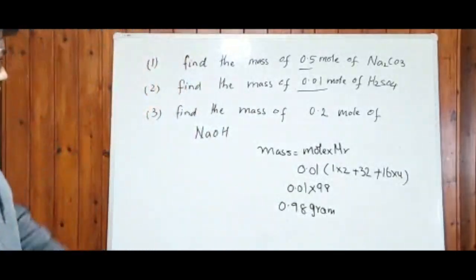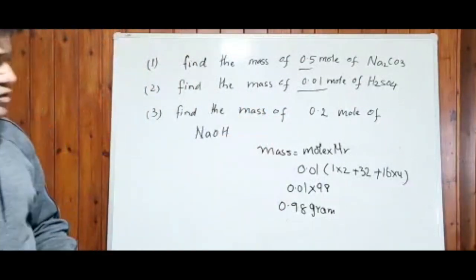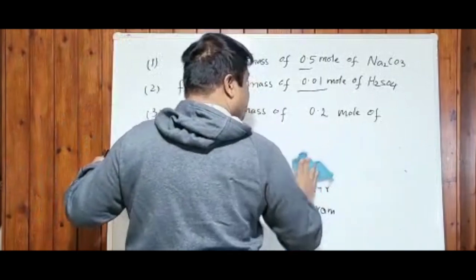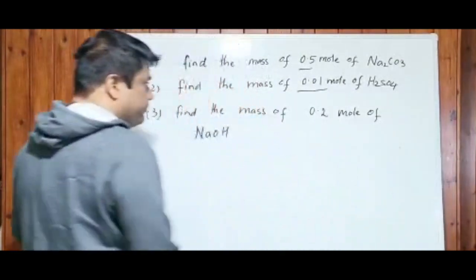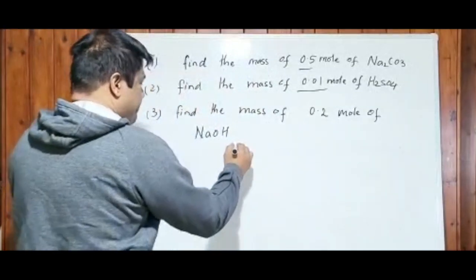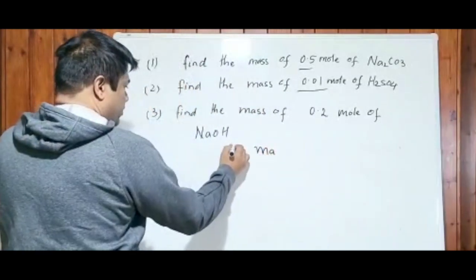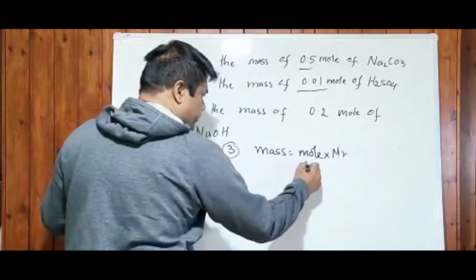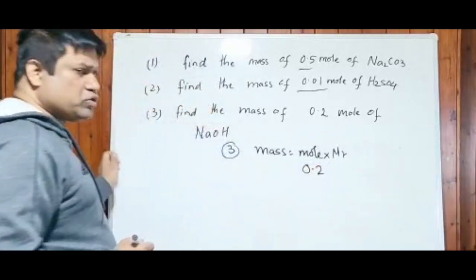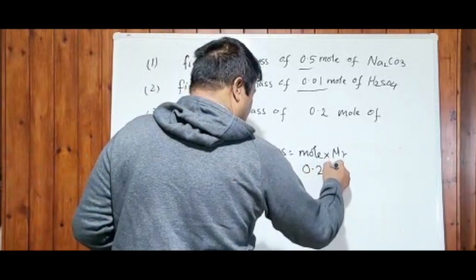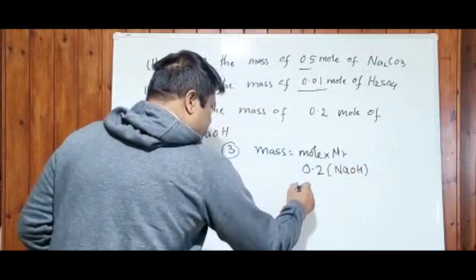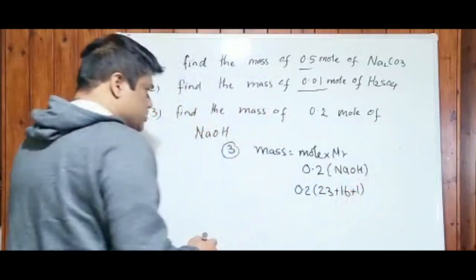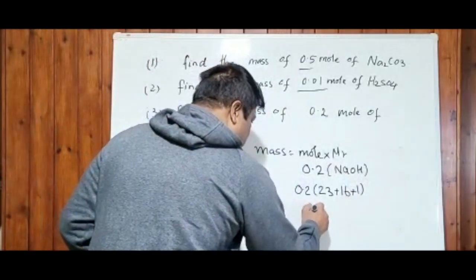Please copy down that one. The last one, you want to try it? Find the mass of 0.2 mole of sodium hydroxide. Question number three: mass equals to mole times its MR. How many moles? It is given to 0.2 moles. MR of the sodium hydroxide, NaOH. 0.2 mole, sodium 23, plus oxygen 16, plus hydrogen 1, which equals to 40. So 0.2 times 40.